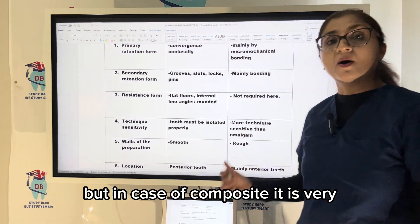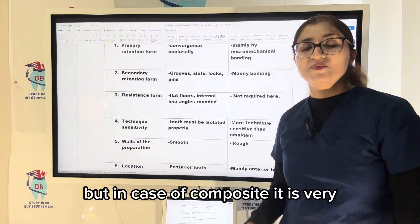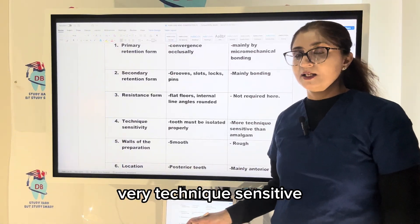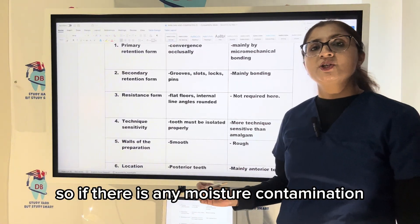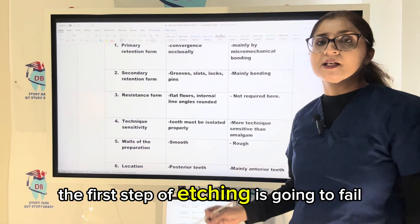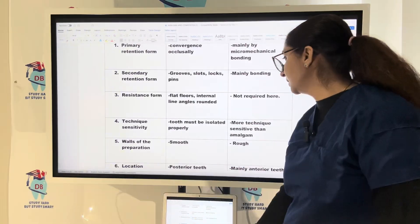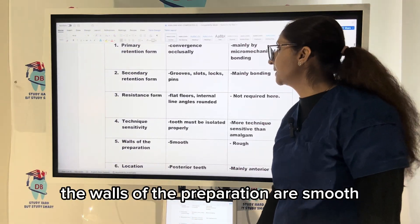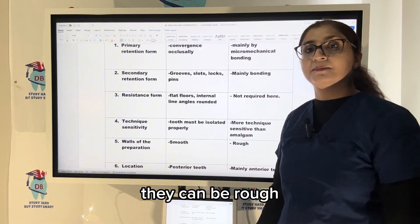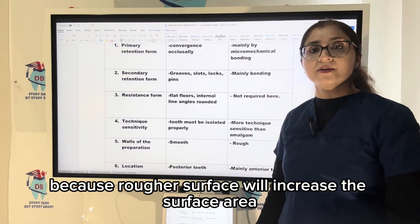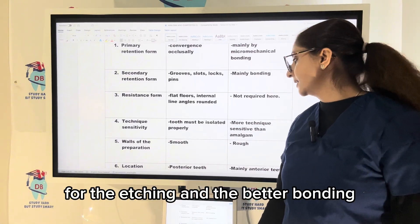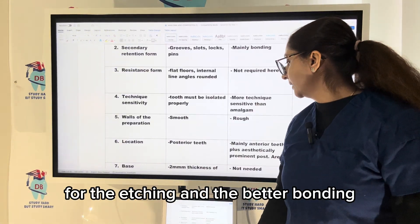In case of composite, it is very technique sensitive. If there is any moisture contamination, the first step of etching is going to fail. The walls of the preparation are smooth with amalgam, but for composite they can be rough because a rougher surface increases the surface area for etching and better bonding.